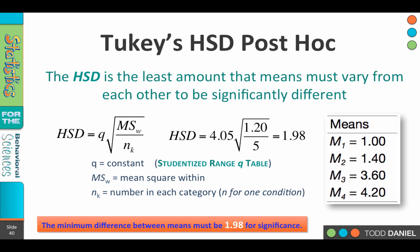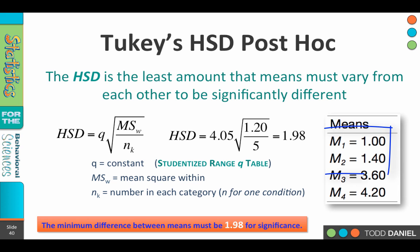So when we do the math, we come up with an HSD value of 1.98. That means the minimum difference between means must be at least 1.98 for them to be statistically significantly different. Mean 1 is 1 and mean 2 is 1.4 — that's a difference of 0.4, which is less than 1.98. So those two means are not statistically significantly different.